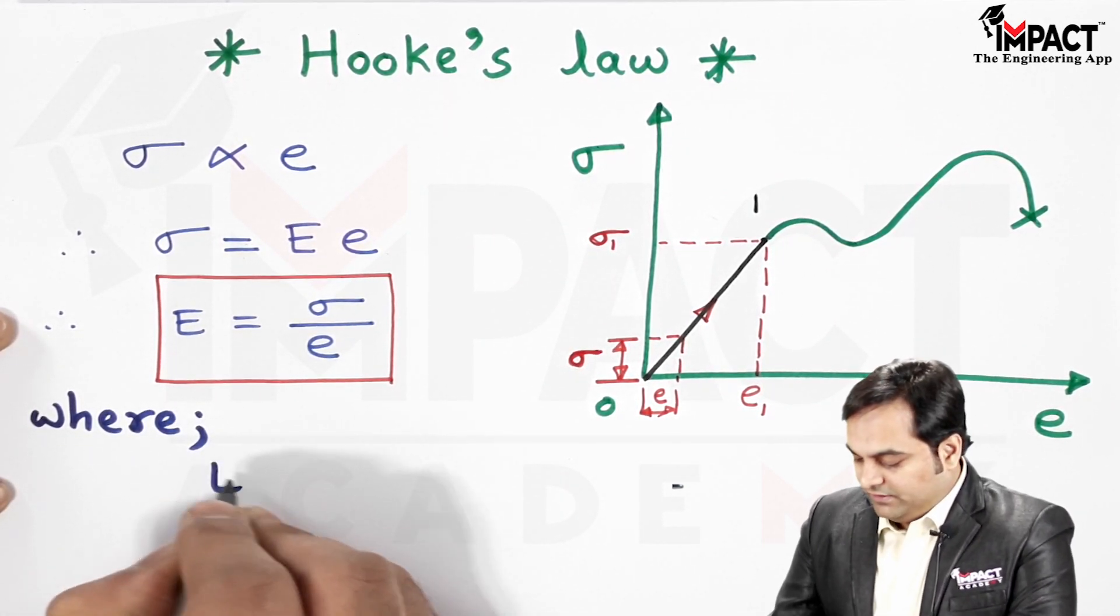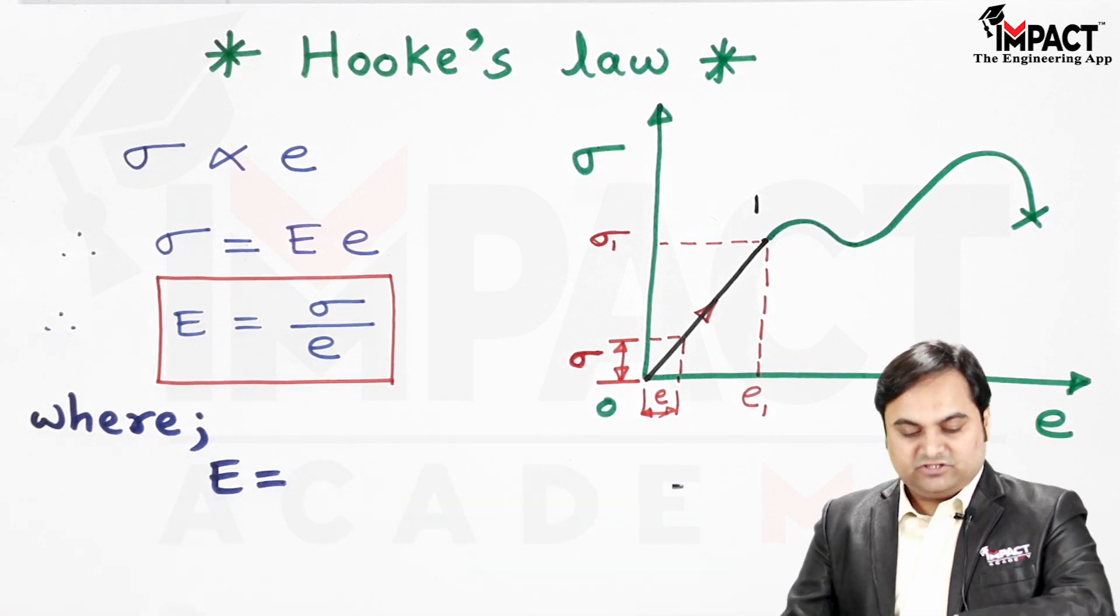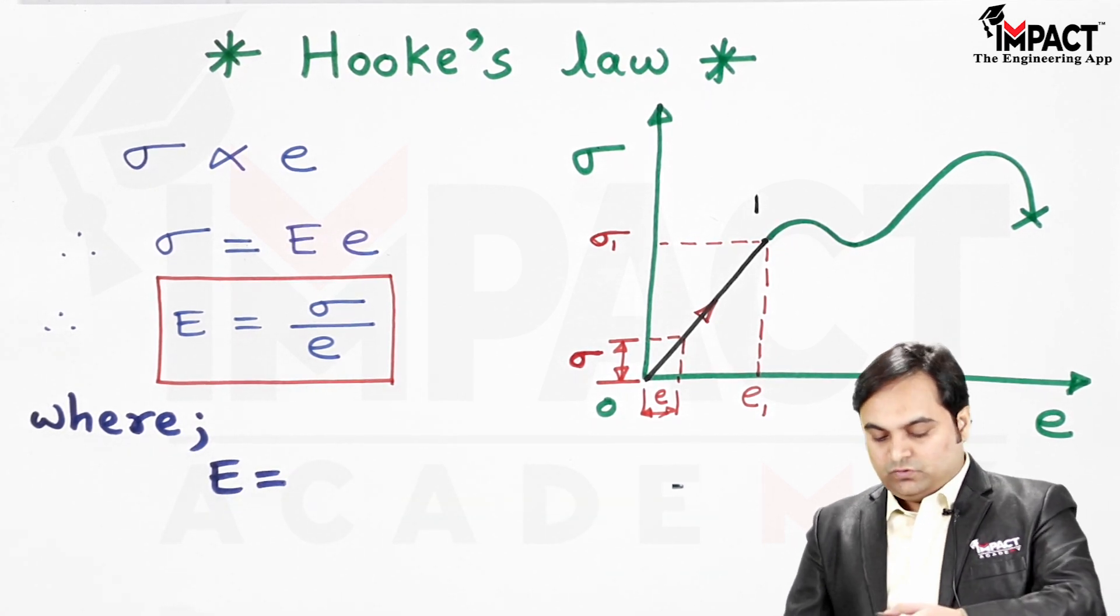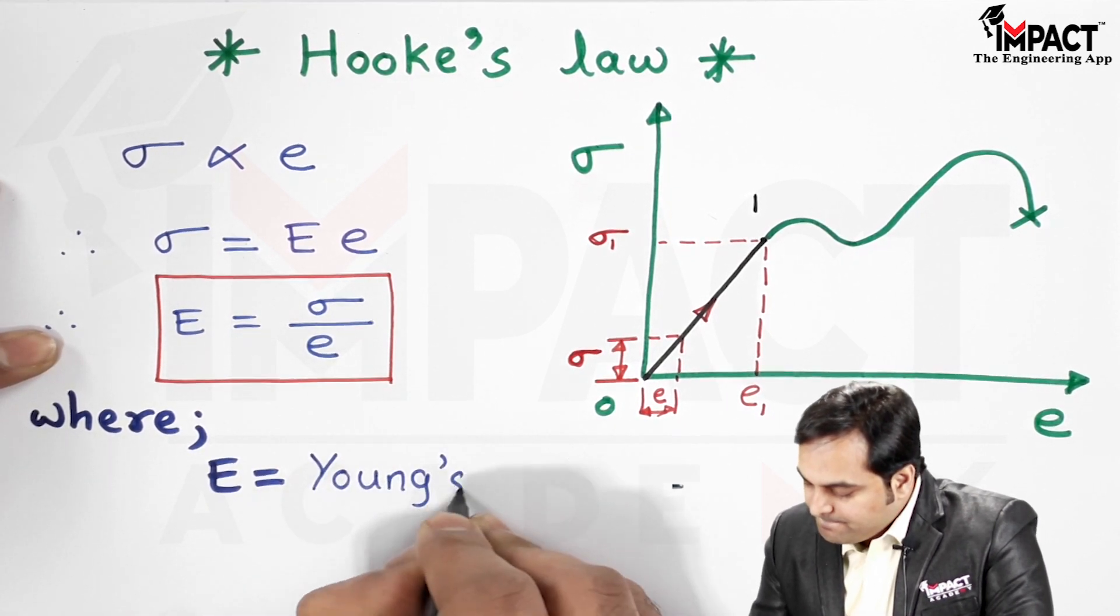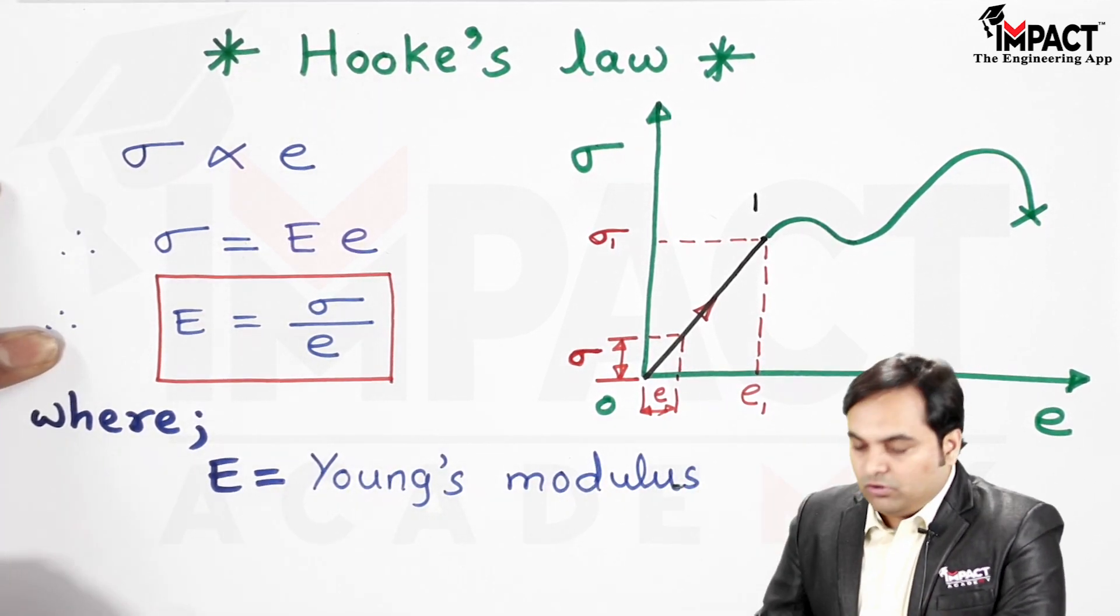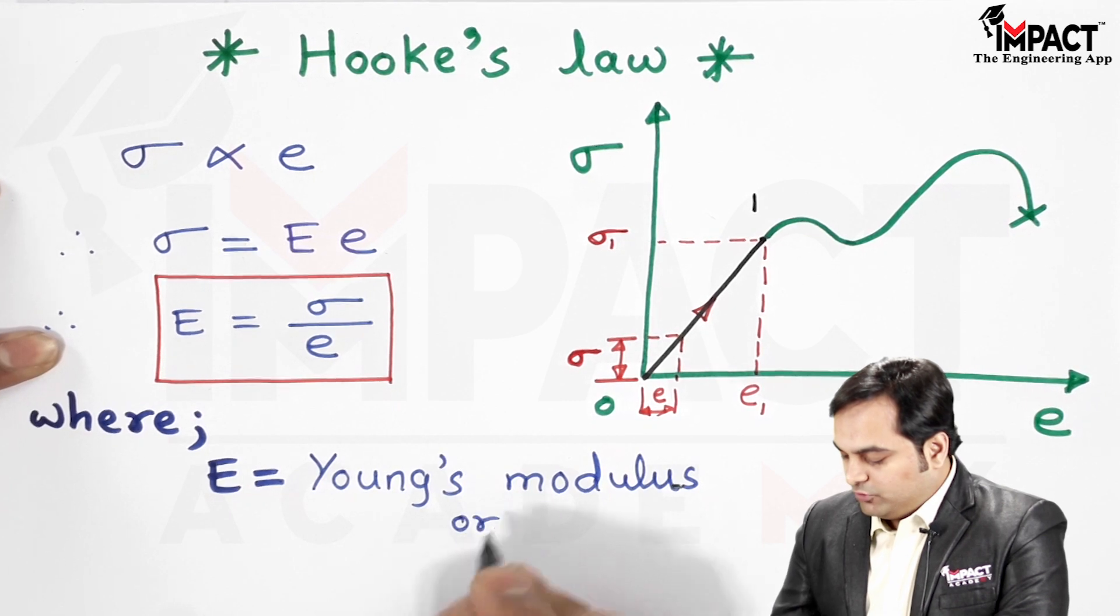Where E is called Young's modulus or the constant of proportionality, also called the modulus of elasticity.